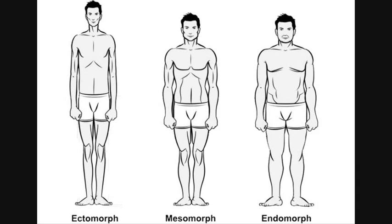The endomorph is the more naturally fat of the three body types. He finds it really easy to gain weight and stores a lot of his energy as fat. They usually have quite big body frames and don't find it too hard to gain muscle.